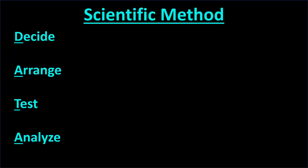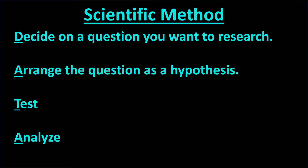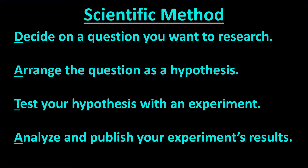Let's expand each word for the four steps. Step 1: Decide on a question you want to research. Step 2: Arrange the question as a hypothesis. Step 3: Test your hypothesis with an experiment. Step 4: Analyze and publish your experiment's results. Next, we'll give a little more explanation for each of these steps.